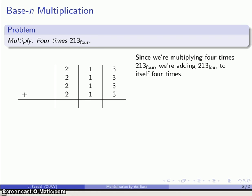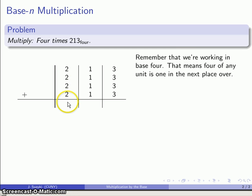Looking ahead, we know that because we're working in base 4, 4 of anything can be traded for something in the next place over. So I can take these 4 things here and treat each one as its own unit.